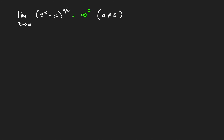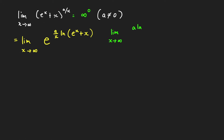We use the same strategy as the previous problems. We write this as the limit as x approaches infinity of e raised to the power (a over x) times ln of the base (e raised to x plus x). Now we compute the limit of the power of e: the limit as x approaches infinity of a times ln of (e to the x plus x) all over x.